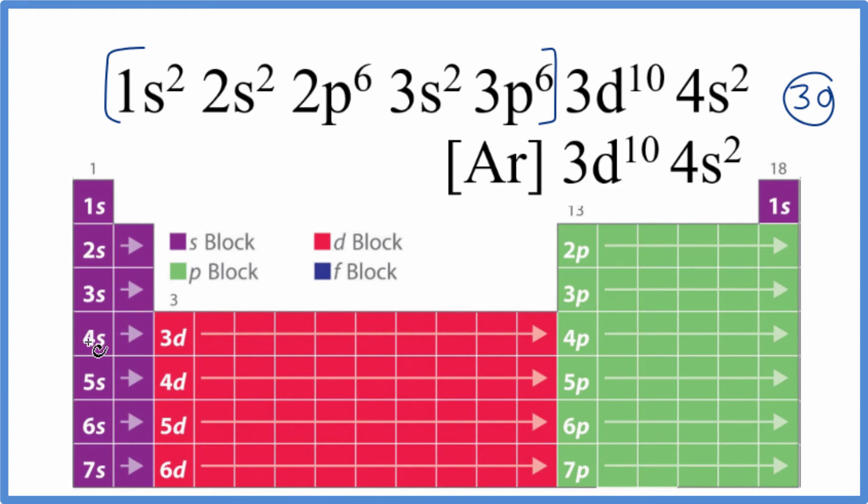Here's our 4s1, 4s2. And then here's the d block. We have 10. So go 3d, 1, 2, 3, 4, 5, 6, 7, 8, 9, 10.